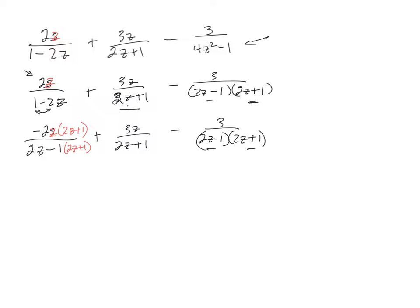On this second one, to get the common denominator I'm going to have to multiply top and bottom by 2z minus one. So 2z minus one. And this one already has the right denominator.